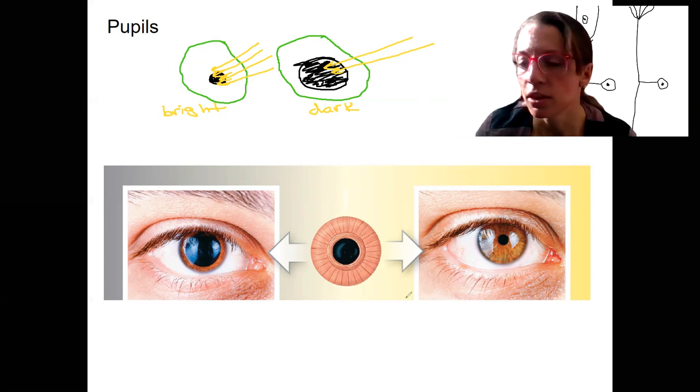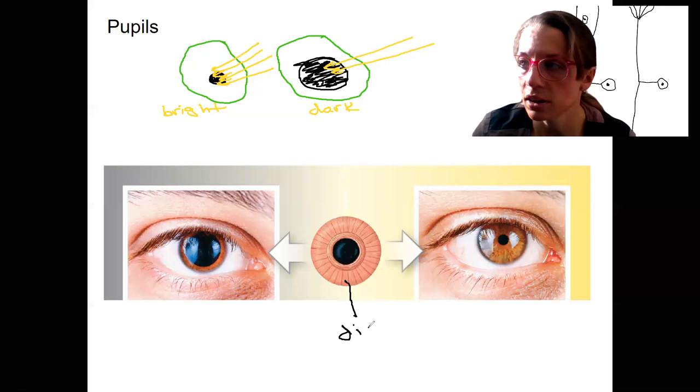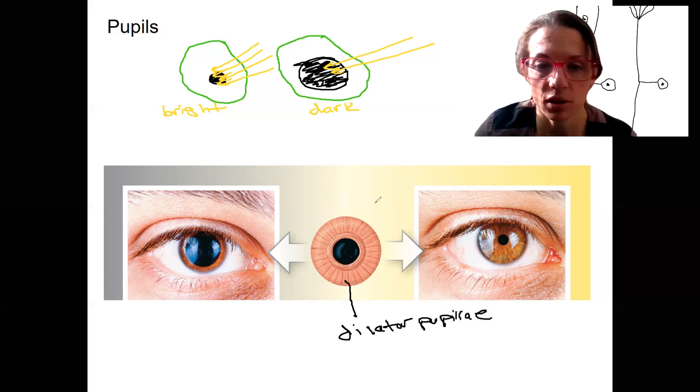So this one out here, this is our dilator pupillae. This is the muscle. When it constricts, it pulls the iris out and dilates the pupils.